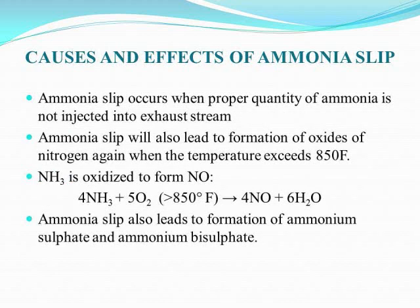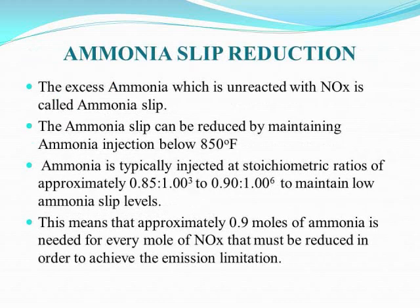Let us see what ammonia slip means. Ammonia slip will occur in this SCR system but can be rectified. The effluent gas stream leaving the SCR system contains unreacted NOx and small quantities of ammonia. Ammonia emissions are generally termed ammonia slip — it is the reagent that has passed through the SCR catalyst without participating in the chemical reaction.